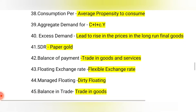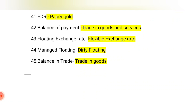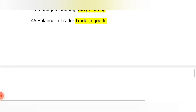Aggregate demand formula: consumption plus investment plus induced consumption equals aggregate demand. Excess demand leads to a rise in prices in the long run. SDR is paper gold. Balance of payment covers trade in goods and services. Floating exchange rate is a flexible exchange rate. Managed floating is also called dirty floating. Balance of trade covers trade in goods only.